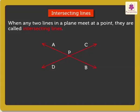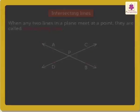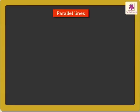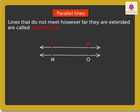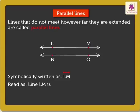Two lines in a plane can intersect in one and only one point. Coming to Parallel Lines. Lines that do not meet however far they are extended are called parallel lines. Here, lines LM and NO are parallel to each other. It is symbolically written as and read as Line LM is parallel to Line NO.